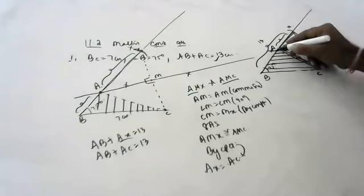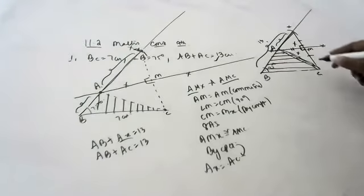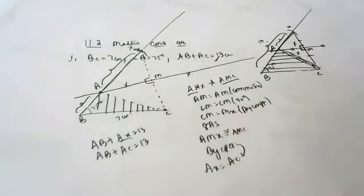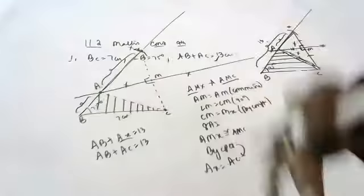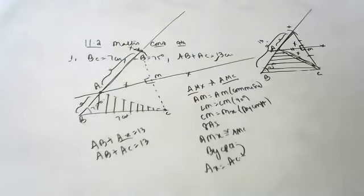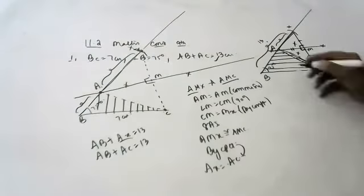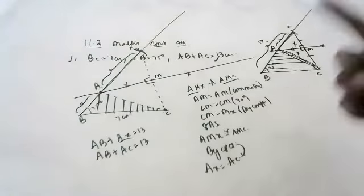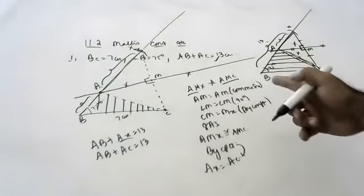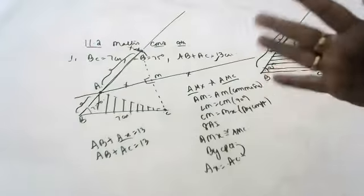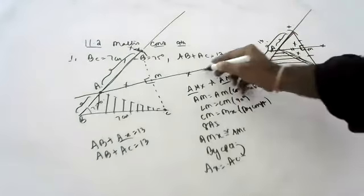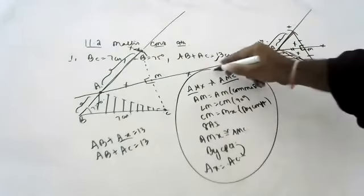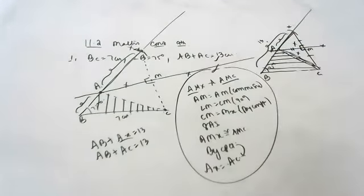Whatever is AX — so AX equals AC. If AB plus AX is 13, then AB plus AC is also 13. Construction steps you can write on your own. Proof I have told you in general. If you know the proof, then you will understand all the questions.